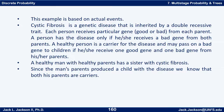If you got two good genes, not only do you not have the disease, you can't pass on a bad gene. So here's the situation we were dealing with: a healthy man with healthy parents has a sister with cystic fibrosis. Since the man's parents produced a child with the disease and his parents did not have the disease, we know that both his parents are carriers — each with one good gene and one bad gene.